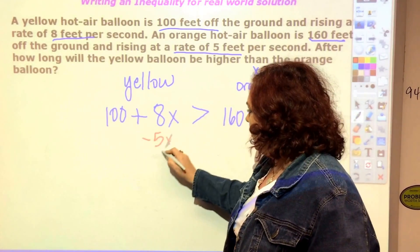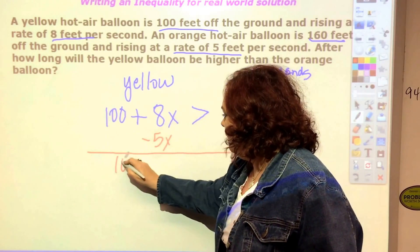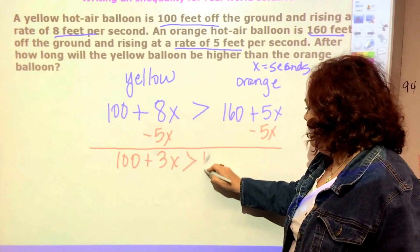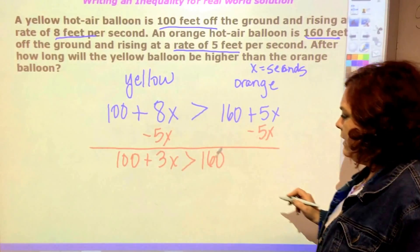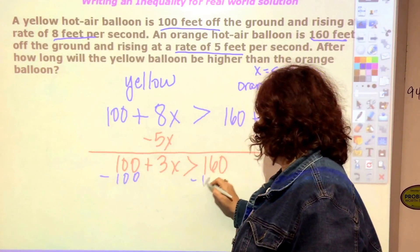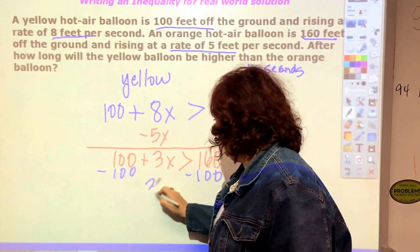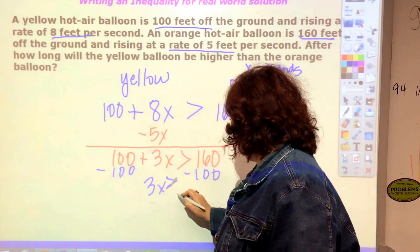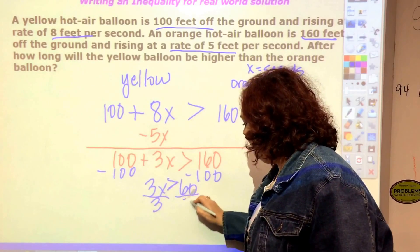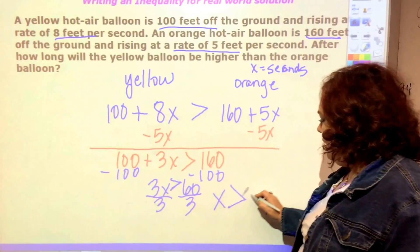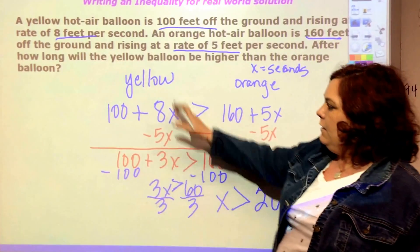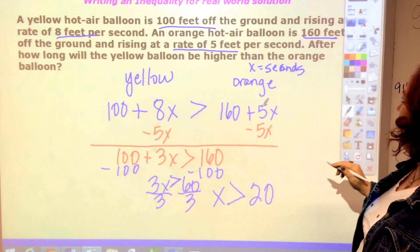Let's solve. Getting rid of some x's first, we get 100 + 3x is less than 160. Subtracting 100 from both sides gives 3x is greater than 60. Dividing both sides by 3, x is greater than 20. So after 20 seconds the yellow balloon is going to be higher than the orange one.